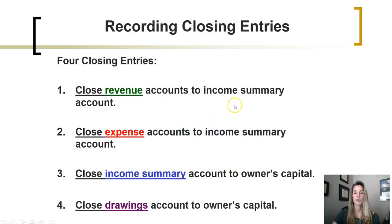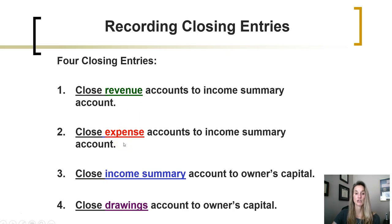The closing process is done through a four journal entry process, which we call the four closing entry process. The first closing entry closes out the revenue accounts. The second closing entry closes out the expense accounts. The third closing entry closes out an income summary account, which we'll talk about in a minute. And then the last one closes out the drawings account.